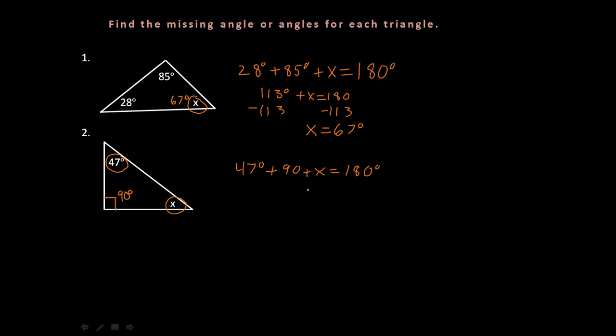Okay, so then we're going to go ahead and add 47 plus 90, and we get 137 degrees plus X equals 180. And then we're going to subtract 137, and that gives us 43 degrees. So X is equal to 43 degrees. There you go.